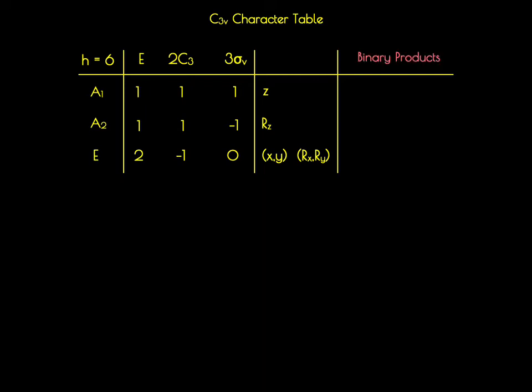The binary products are the products of the three linear functions — x, y, and z — and are outlined here. Oftentimes some of these functions are expressed as linear combinations. In the C3V point group, x² and y² are expressed as linear combinations of each other. So for the C3V point group, we're going to determine how these six functions transform: xy, xz, yz, z², x²+y², and x²−y².